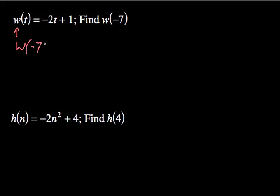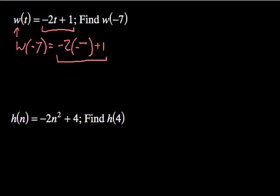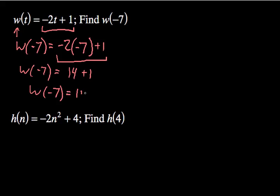So, w of negative 7 equals negative 2 — and instead of writing the letter t, I'm going to write a big open parenthesis — plus 1. What I just did is I rewrote the function. Instead of writing t, I wrote an open parenthesis. This is important, especially when you have negatives or exponents. In this case, this shows negative 2 times negative 7. We all know that is a positive 14. So, w of negative 7 equals 14 plus 1. The final answer is w of negative 7 equals 15.